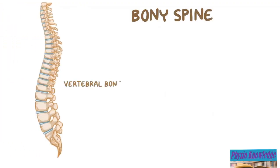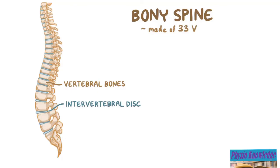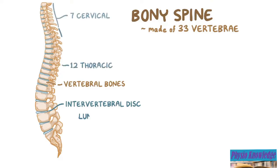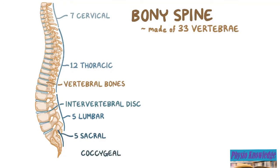The bony spine is made of vertebral bones, and there are intervertebral discs that sit between adjacent vertebrae. The spine is made of 33 vertebrae, which can be divided into 5 regions. The cervical region has 7 vertebrae, the thoracic region has 12, the lumbar region has 5, the sacral region has 5 as well, and the small tail-like coccygeal region is made up of 4 fused vertebrae.